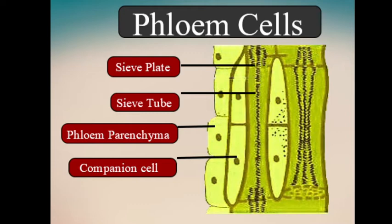Food manufactured by the leaves is transported to all parts of the plant by tubes called phloem which are present in all parts of the plant. The transport of food from the leaves to other parts of the plant is called translocation.